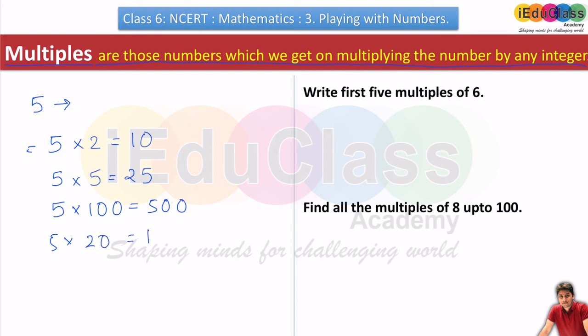If I multiply 5×5, it will be 25. So all these numbers I got are in the table of 5. In the table of 5, all the numbers that come are its multiples. Multiples are unlimited - remember this. As much as you multiply 5 with different numbers, you will get new multiples, and they will keep going. Example: write first five multiples of 6.